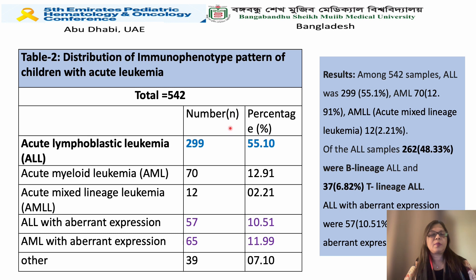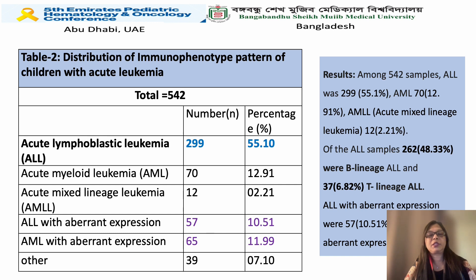We analyzed 542 bone marrow samples. The most common finding was acute lymphoblastic leukemia at more than 50%, followed by acute myeloid leukemia at 12%, miscellaneous leukemia at 2.21%, and ALL with aberrant expression and AML with aberrant expression each around 10%.